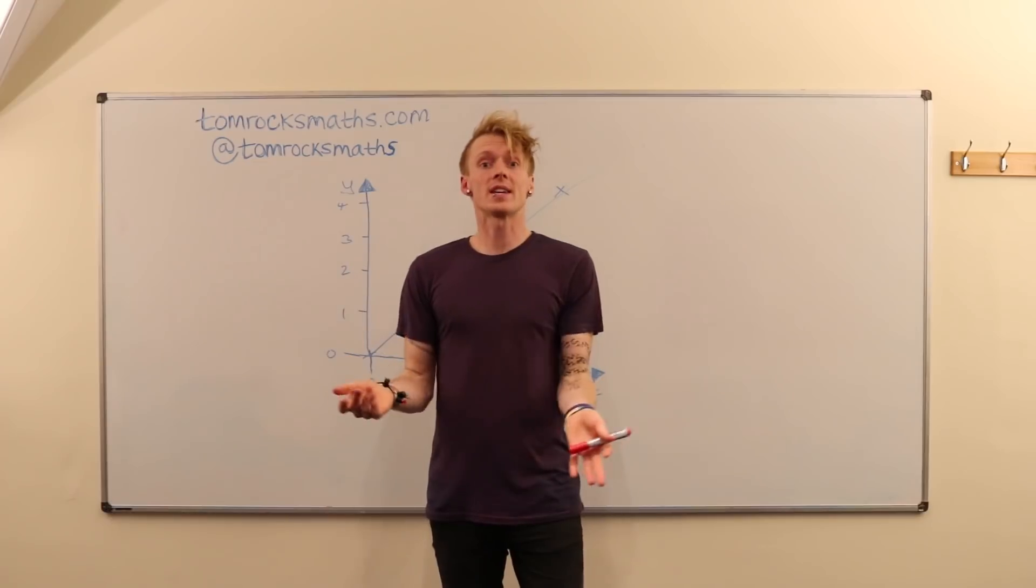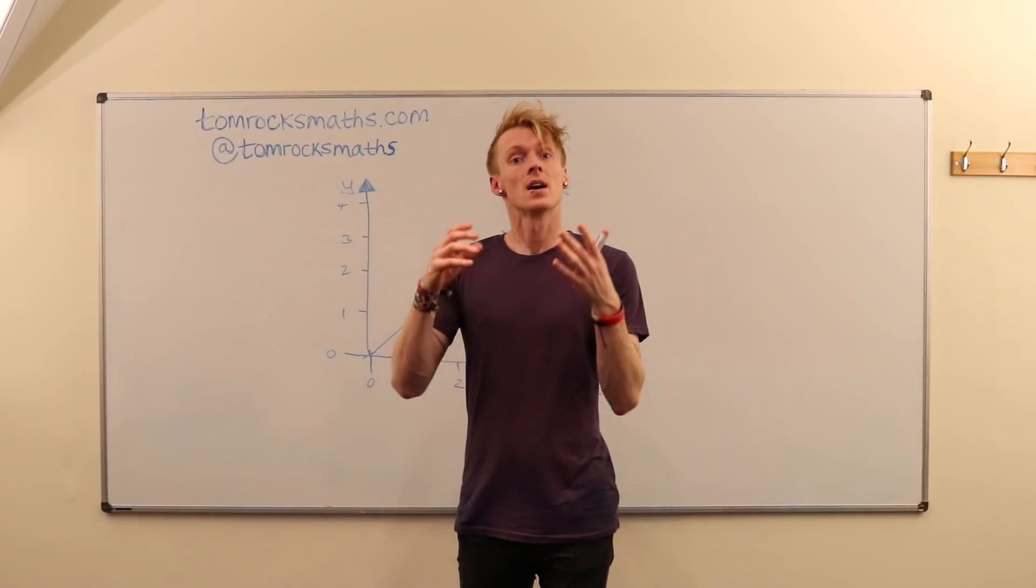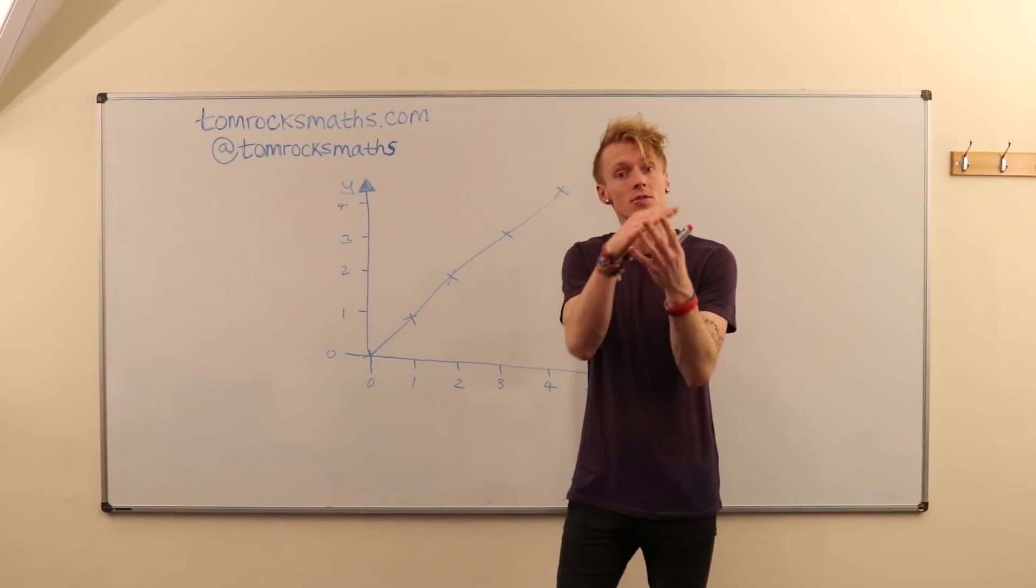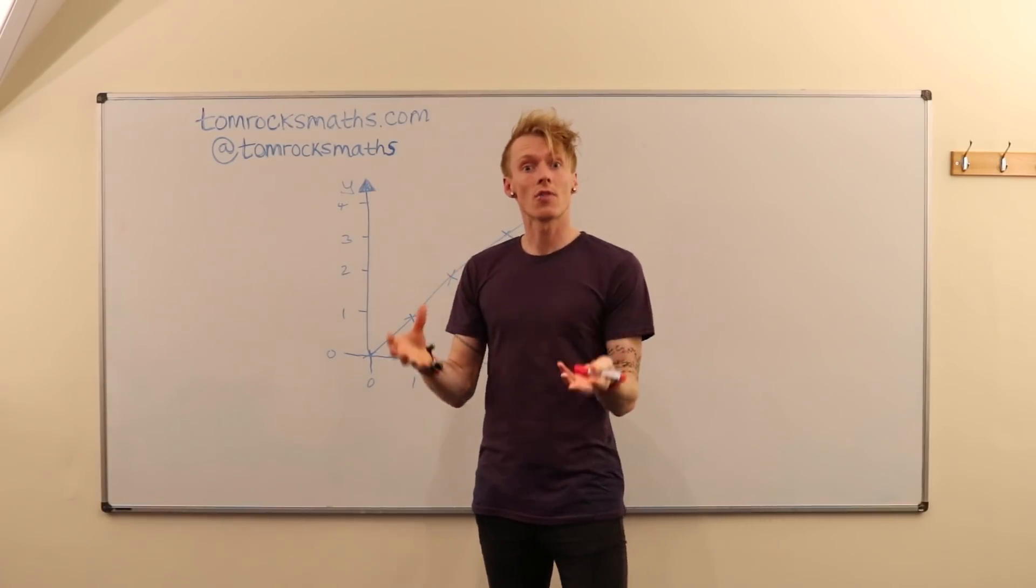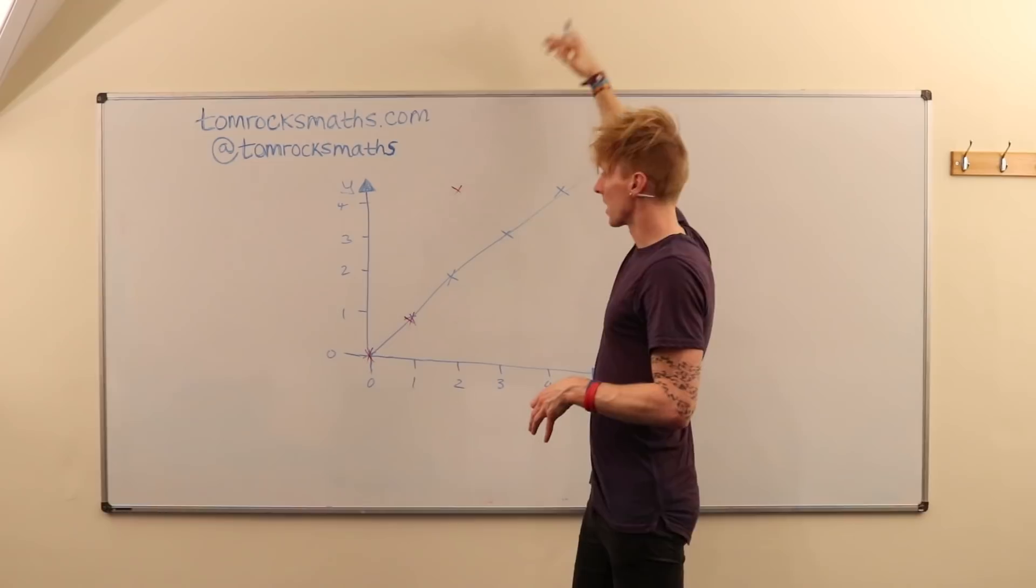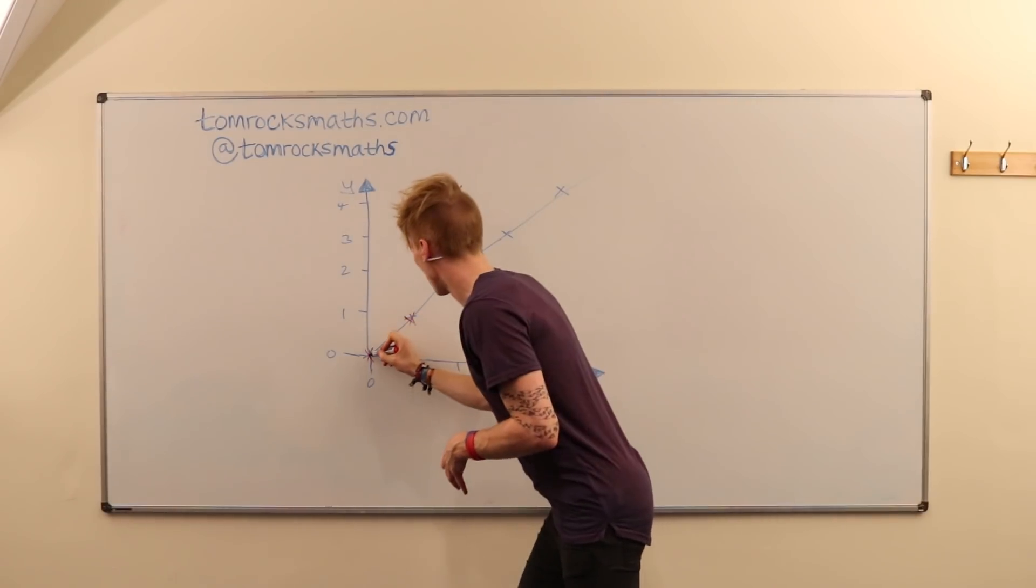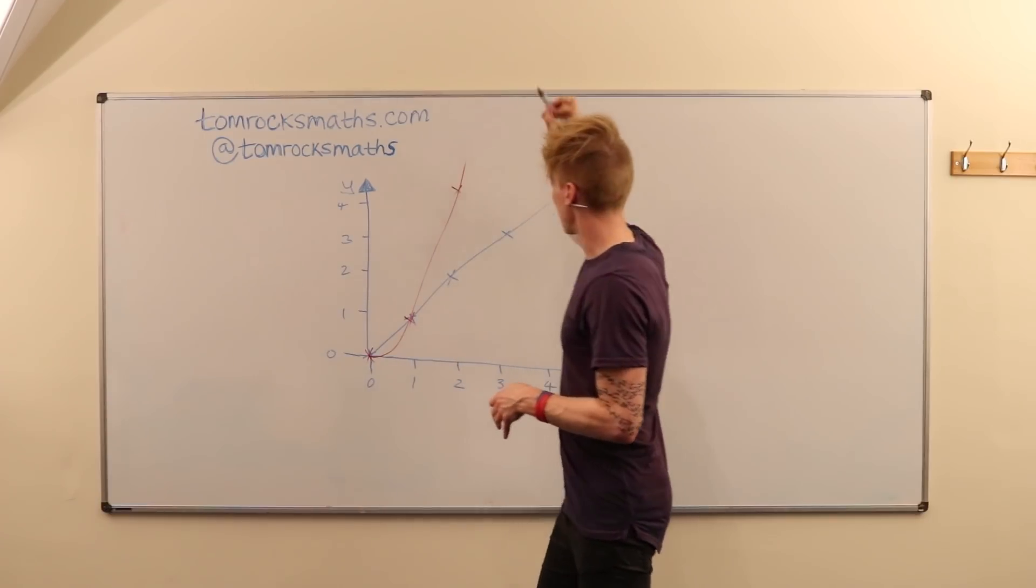Now let's make it a little trickier and consider y equals x squared. So as before we can just plot a few points and join them up to get our graph. And you can see that you've got a lovely parabola shape which is going to increase off and above the board like this.